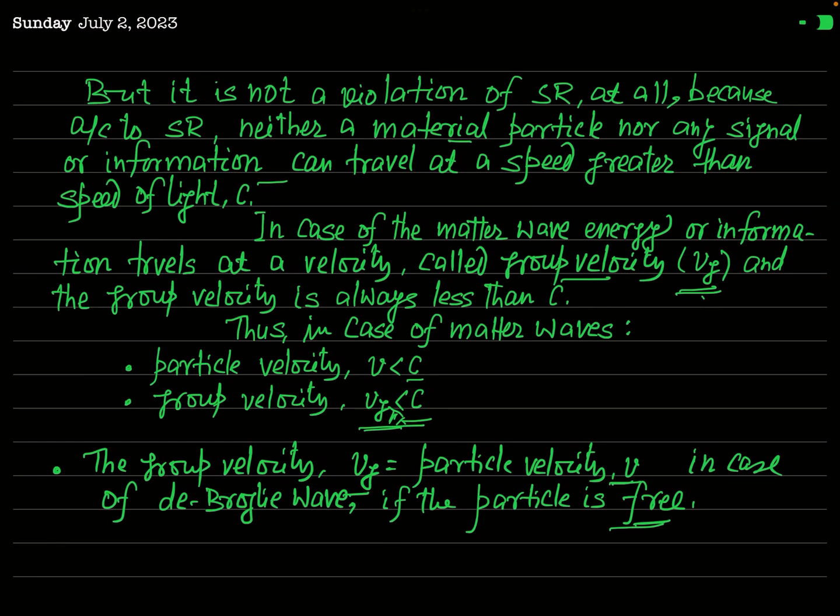Because vp is the phase velocity and information is not carried at phase velocity. So the formula vp = c²/v is not a violation of the special theory of relativity. Thank you very much.